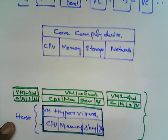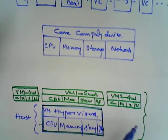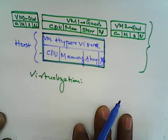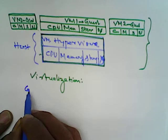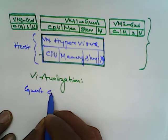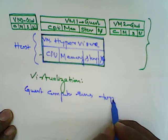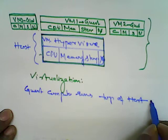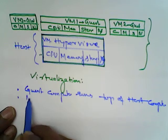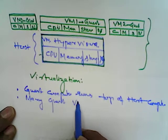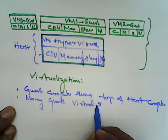So in the case of virtualization, what are the different characteristics that we understand? The guest computer runs on the top of the host computer or host hardware — that is one characteristic. And many guest virtual systems can be created.